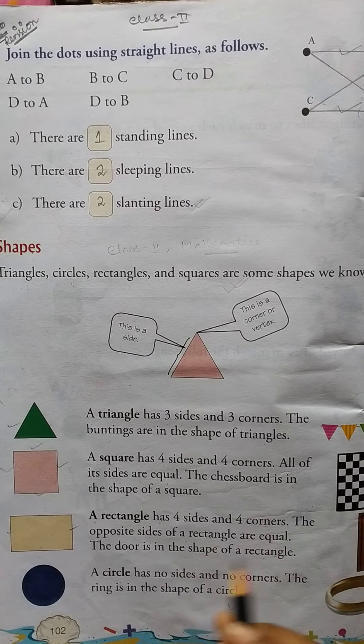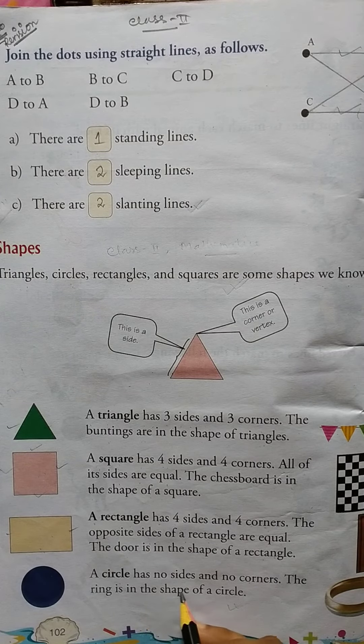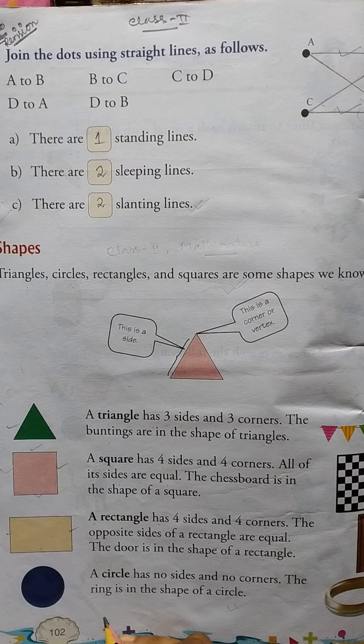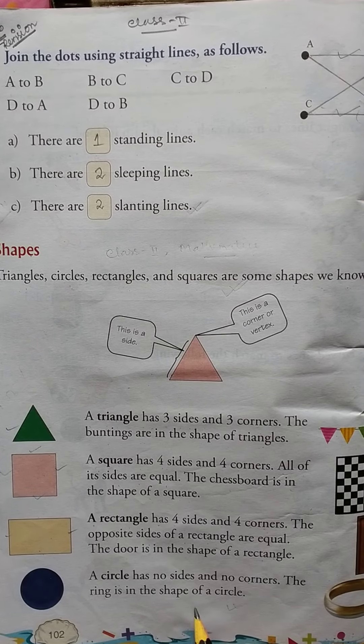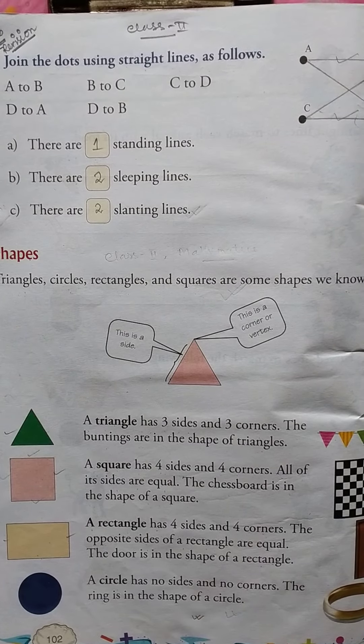A circle. A circle has no sides and no corners. The ring is in the shape of a circle. Okay, thank you.